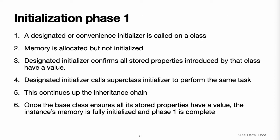Here is how two-phase initialization plays out based on the four safety checks. Phase one: a designated or convenience initializer is called on a class. Memory for a new instance of that class is allocated, though the memory is not yet initialized. A designated initializer for that class confirms that all stored properties introduced by that class have a value; the memory for these stored properties is now initialized. The designated initializer hands off to a superclass initializer to perform the same task for its own stored properties. This continues up the class inheritance chain until the top of the chain is reached, at which point the instance's memory is considered fully initialized and phase one is complete.